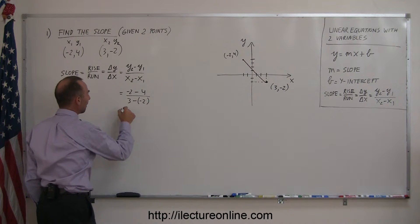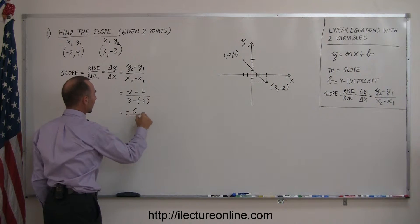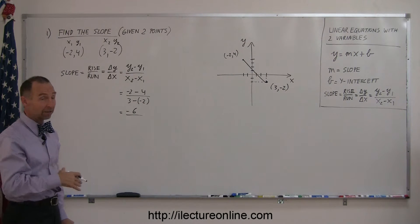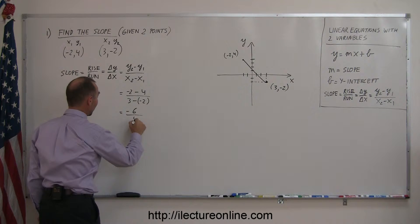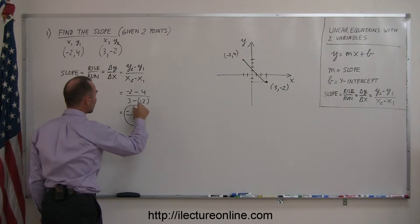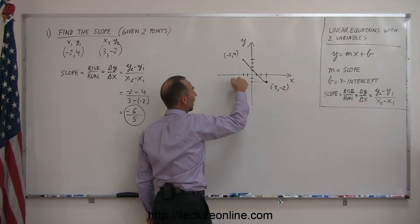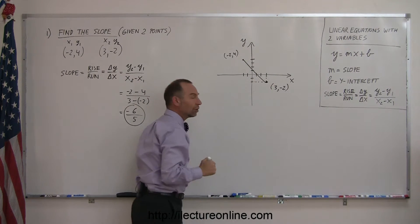Working this out, we get minus 2 minus 4 is minus 6, divided by 3 minus a minus 2, so if we subtract the negative numbers, just like adding the positive numbers, so this is 3 plus 2, or 5, so the slope is minus 6 over 5, that means we drop 6 units, as we move to the right 5 units.